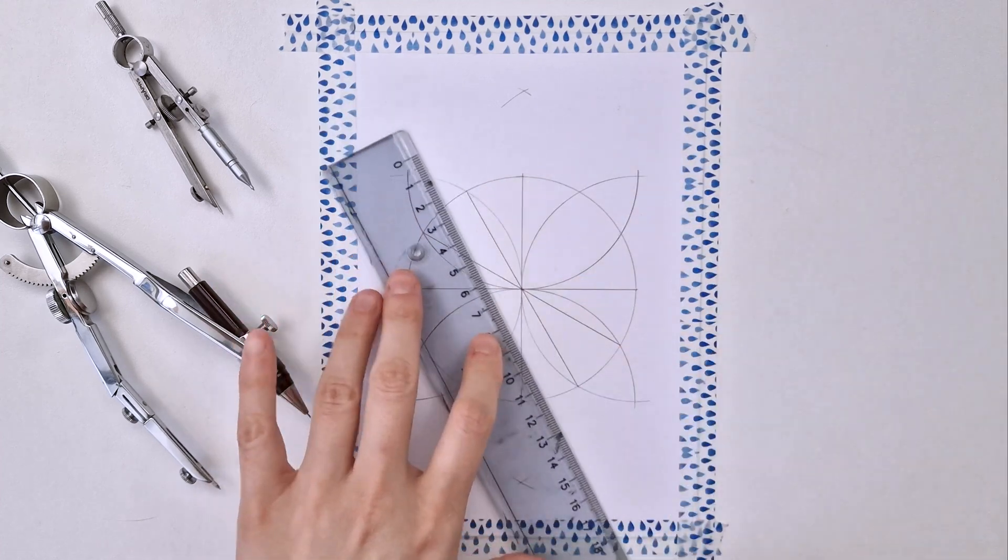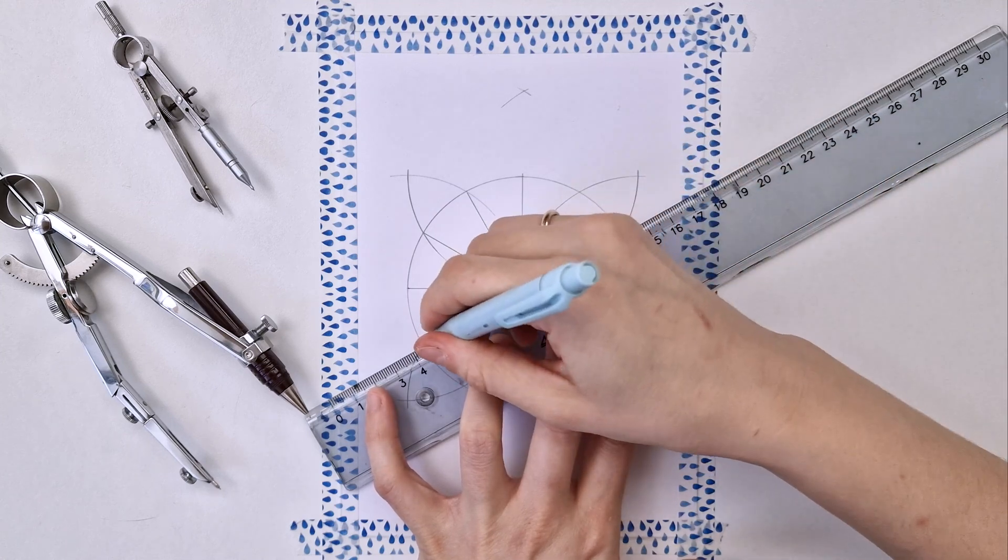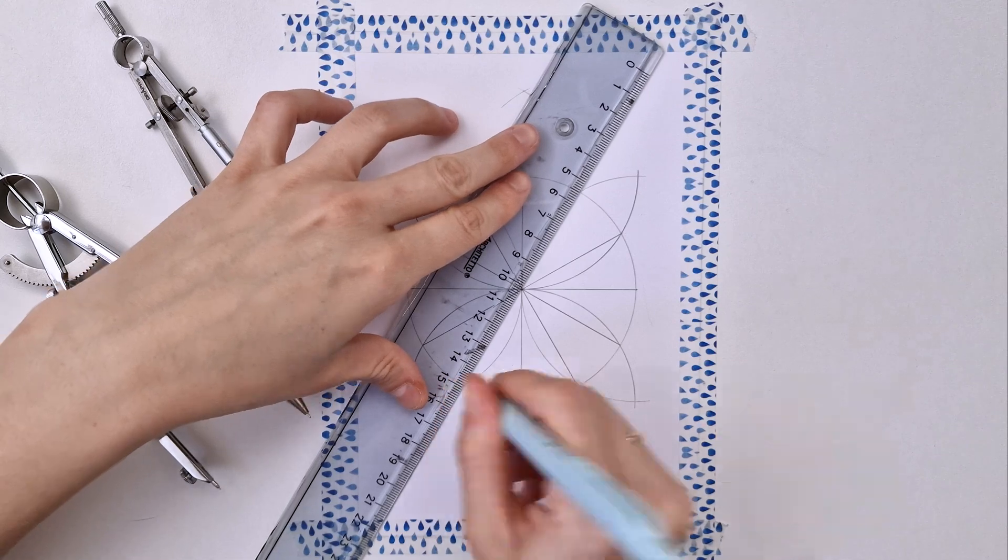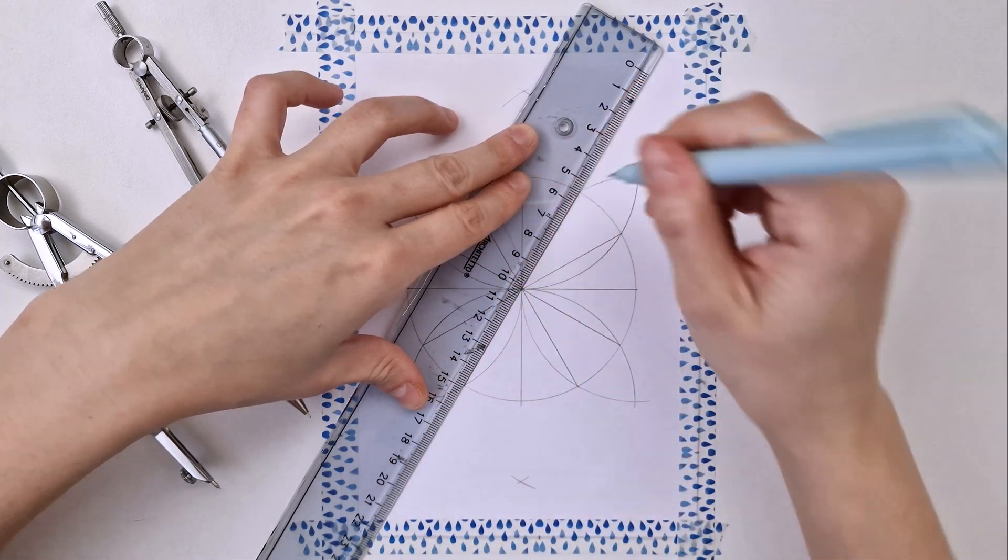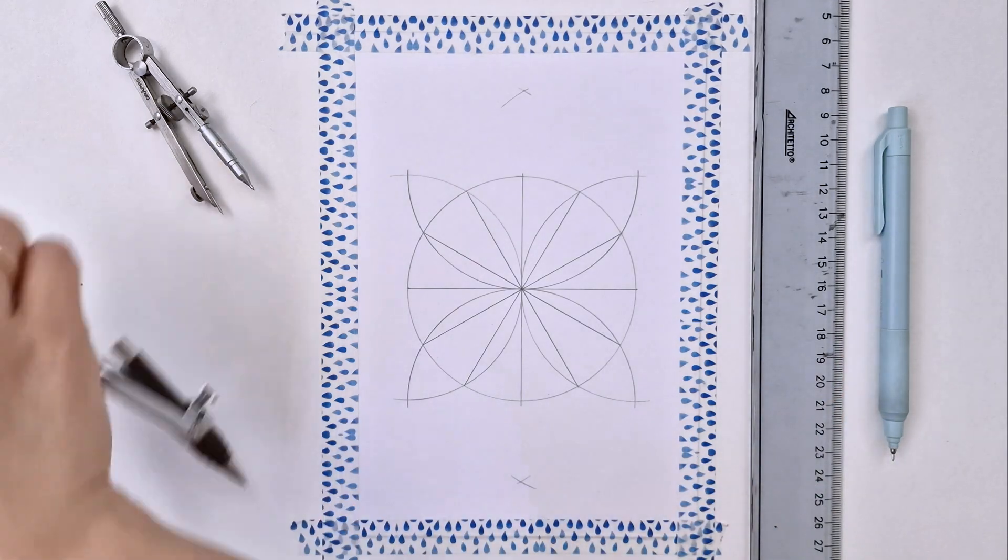Make sure your line passes through the center, and doing like this, I'm dividing my circle into 12 equal parts. Now that I have my 12-fold division, I'm grabbing my compass.